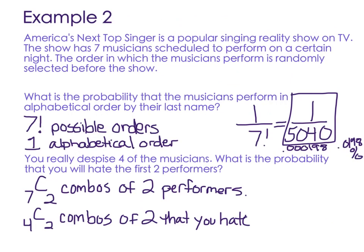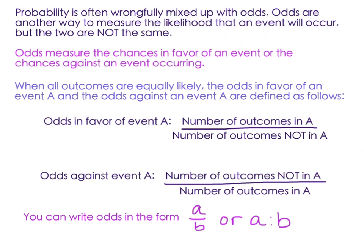So the probability that the first two performers are going to be two people that you don't like would be, the probability is 4C2 out of 7C2. And I'll let you go ahead and use your calculator for that, and you get 6 out of 21, which reduces to 2/7, 2 out of 7, or 28.571% chance that you hate the first two performers. So not high, but it could happen.